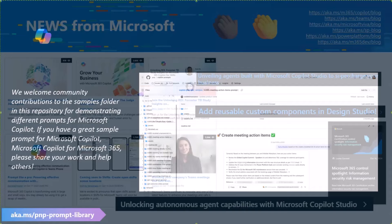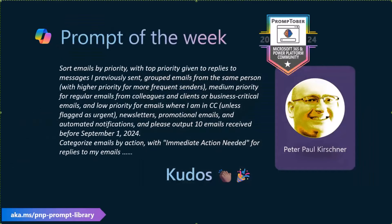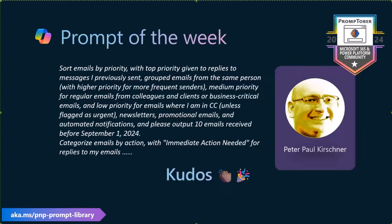Before we go to Together Mode and do pictures, a quick recap on Copilot prompts — one of our new initiatives collecting examples of how Copilot can be used. The weekly prompt of the week comes from Peter Paul Krishner, around sorting emails by priority, marking and grouping them. For example: categorize emails by action with immediate action needed. The coolest thing is what if we had a scheduled agent that would aggregate emails every morning in a list, flagging the most important with deep links — and that is actually possible with scheduled events and agents in Copilot now.